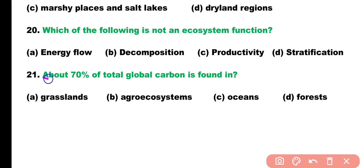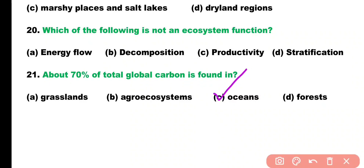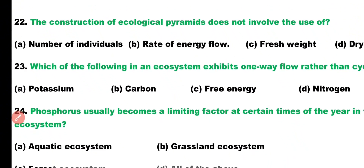Question number twenty-one. About 70% of total global carbon is found in: grassland, agroecosystem, oceans, or forests? Correct answer is option C. About 70% of total carbon is found in the ocean.